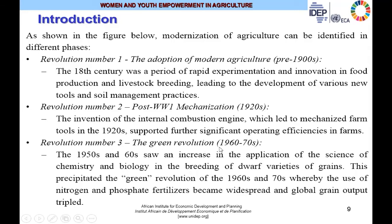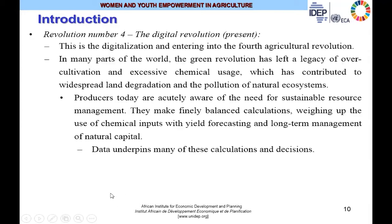Revolution number three is the Green Revolution in the 1960s and 70s. After the end of the Second World War in 1945, through the 1950s and 1960s, there was an increase in the application of chemistry and biology in breeding new planting varieties. This precipitated the Green Revolution in the 60s and 70s, whereby the use of nitrogen and phosphate fertilizers became widespread and global grain output tripled. Revolution number four is the digital revolution, which commenced in the 1980s — the era of digitalization and the fourth agricultural revolution.